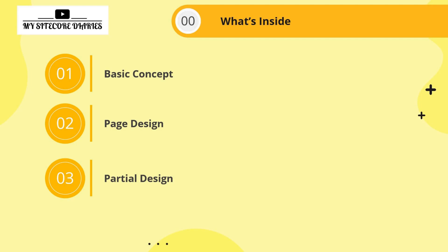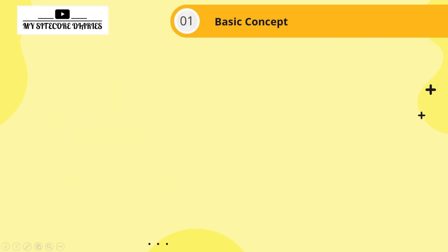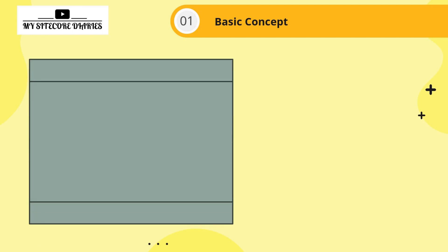Let's start with today's topic — page design and partial design. Any page you're trying to design may have a structure like one column with three rows, or two columns with multiple rows. Let's assume we have a page with one column and three rows sections.